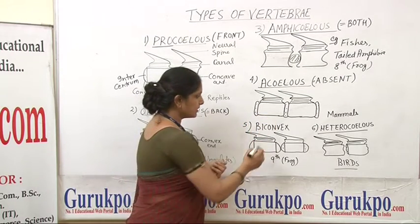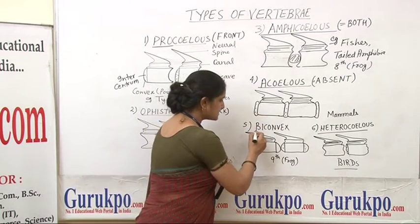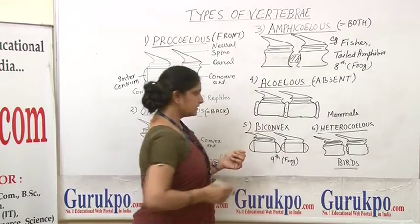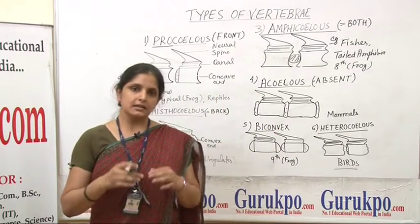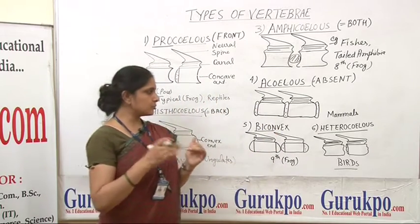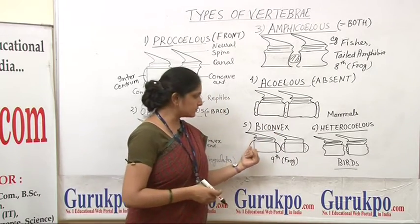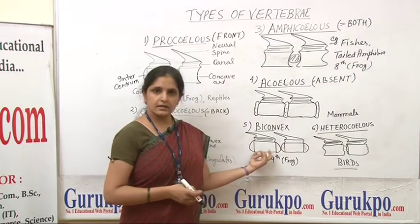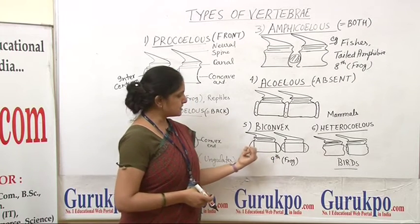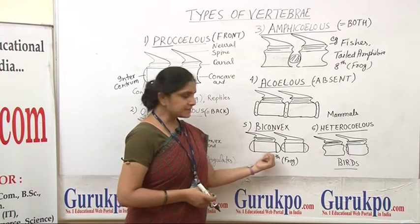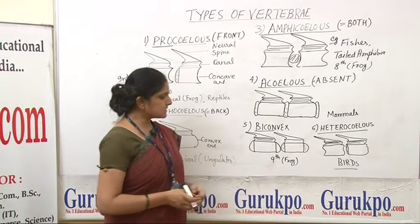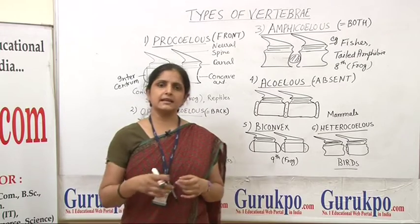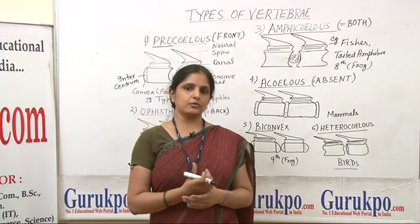The next type is biconvex. As the name suggests, both the anterior and posterior faces of the centrum are convex. This type is present in the ninth vertebra of frogs.